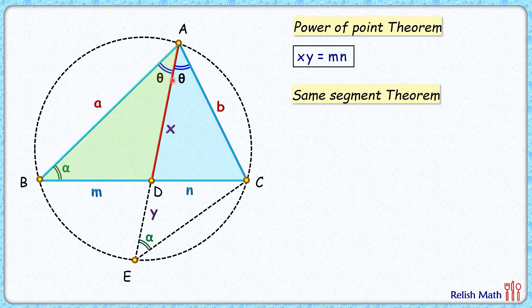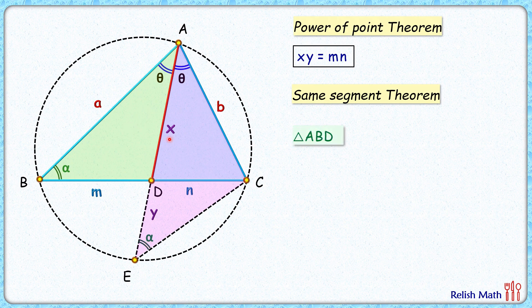By angle-angle similarity, we can say that the green triangle is similar to the pink triangle. As the triangles are similar, the ratio of corresponding sides will be equal.